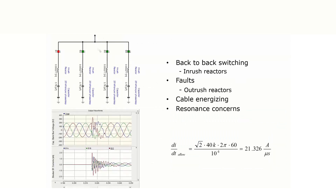For capacitor bank switching, the large inrush current drawn at the beginning is the main concern. Standards have limited this magnitude — for example, a general purpose breaker has a maximum current of 15 kilo-amperes, and the oscillation frequency cannot exceed 4.2 kilohertz. You want to ensure through your simulations that the inrush current does not breach these standard requirements.